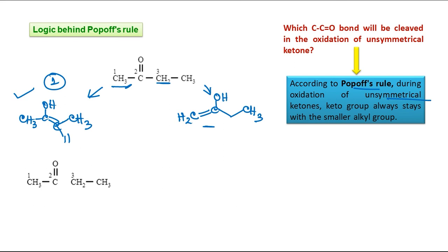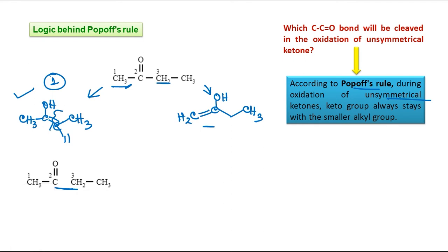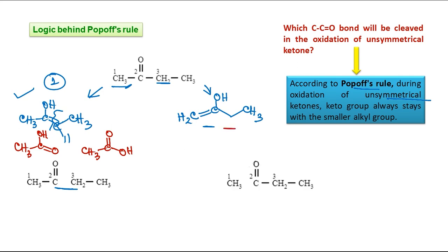Since the first enol is more stable, it gives the product corresponding to 2-3 bond cleavage. Considering the 2-3 C-C bond cleavage of this enol: after cleavage, adding one oxygen gives acetaldehyde CH3CHO, which will ultimately also be oxidized to acetic acid CH3COOH. So for the 2-3 bond cleavage we get two molecules of acetic acid. If you consider this other enol, it corresponds to 1-2 bond cleavage, giving propanoic acid and formic acid decomposing to CO2 and H2O.